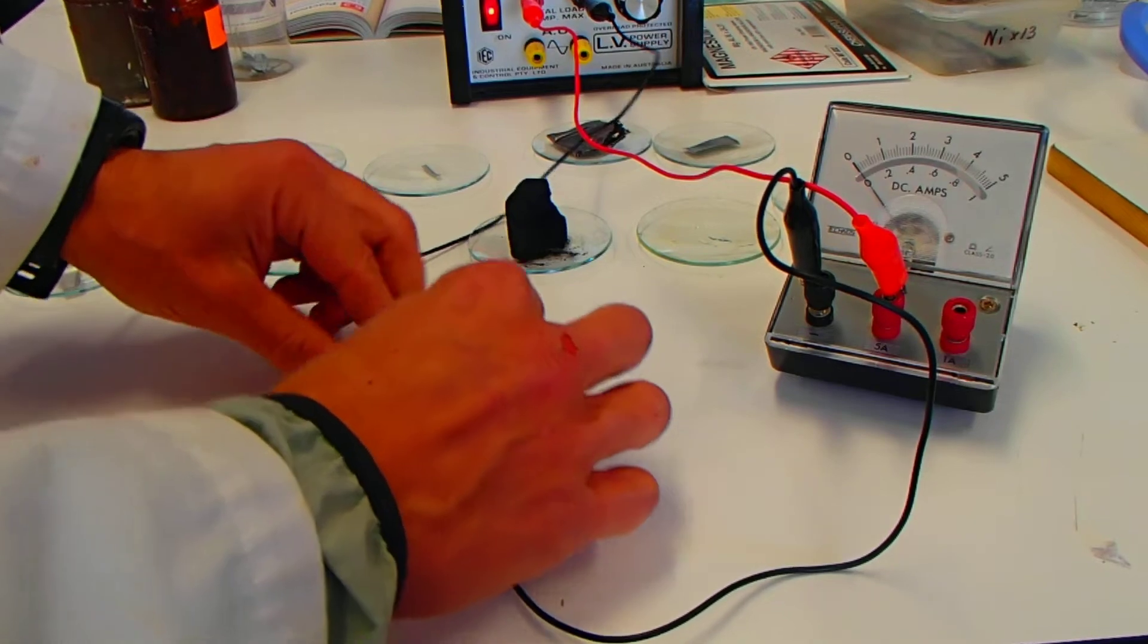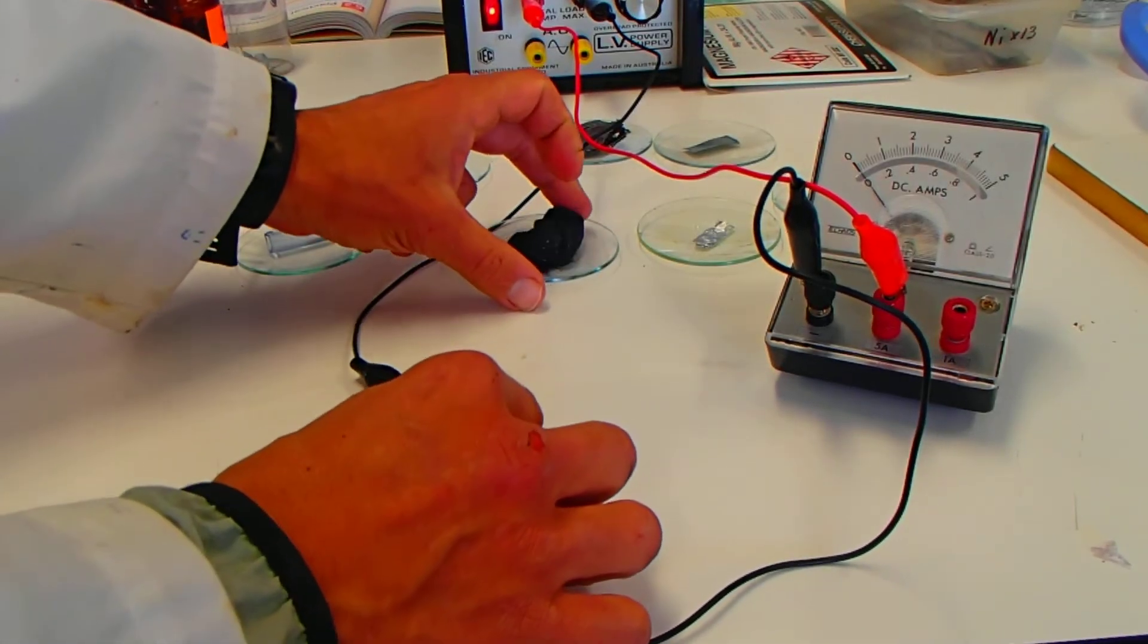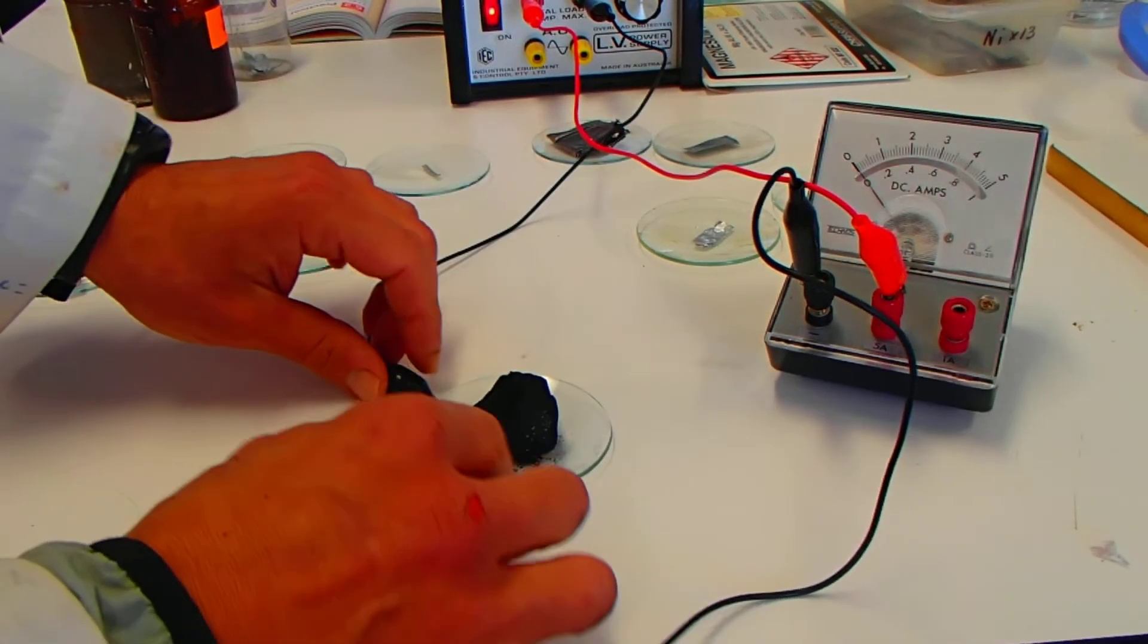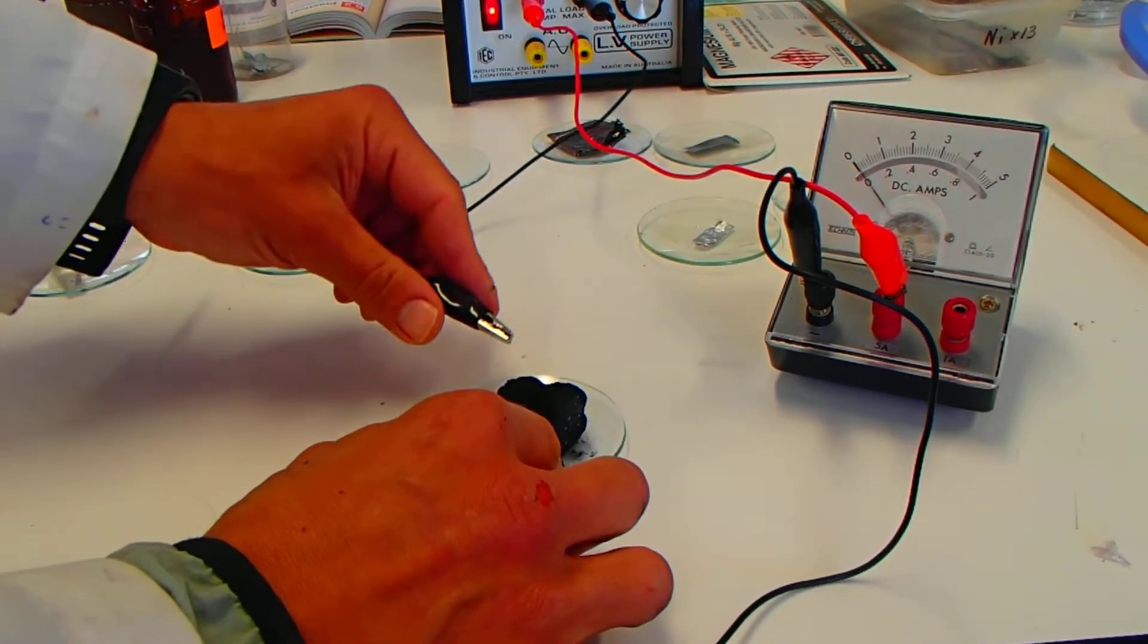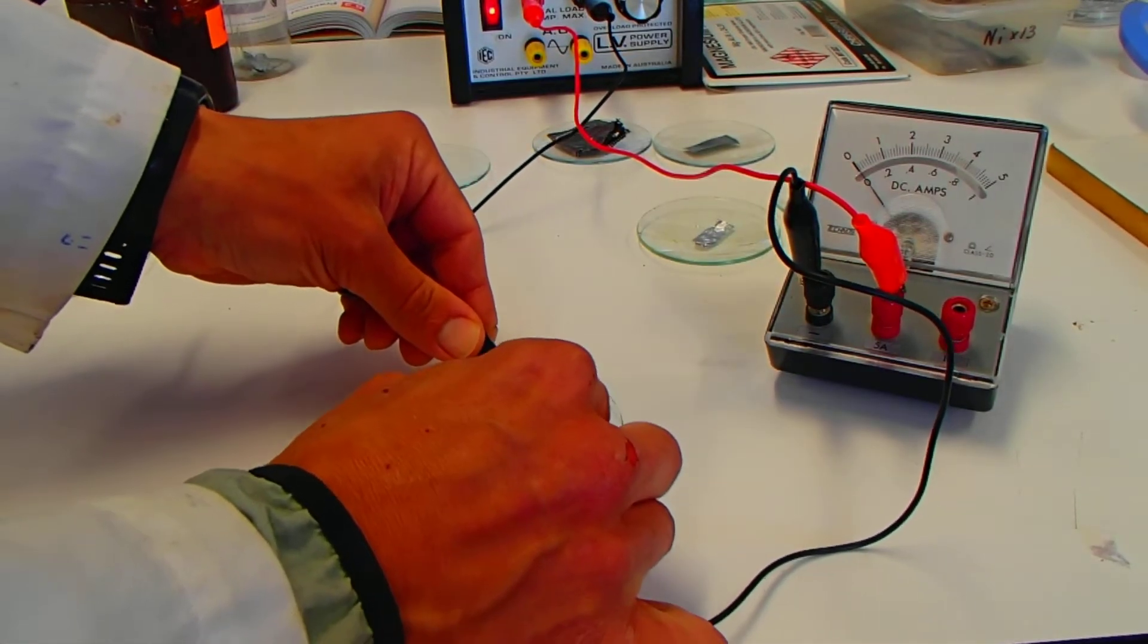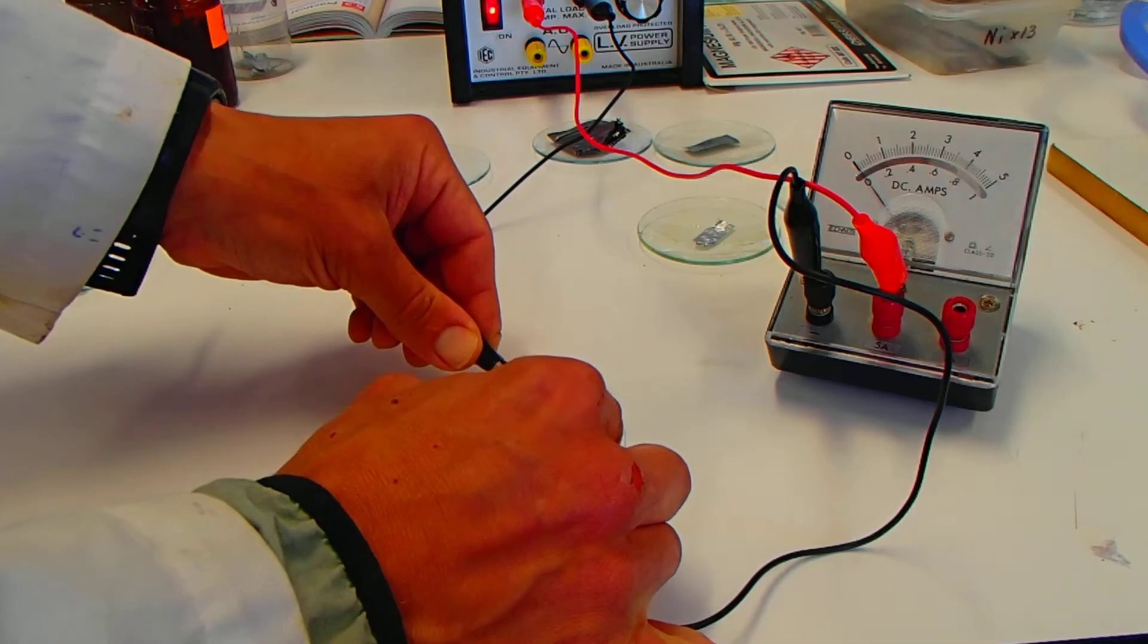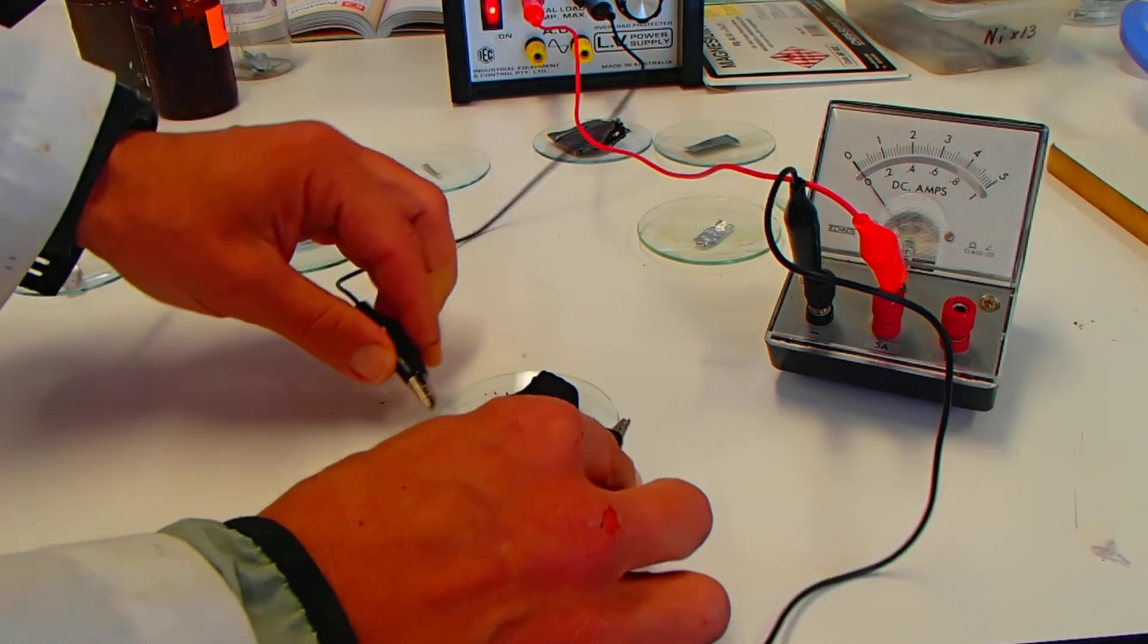Alright, moving on to carbon now. Let's have a look. Carbon is the grubby one. Of course, I'll try and get the clips on there. Clips on there. And nope, nothing there for the carbon. So no current being passed through the carbon.